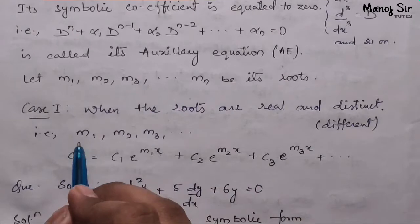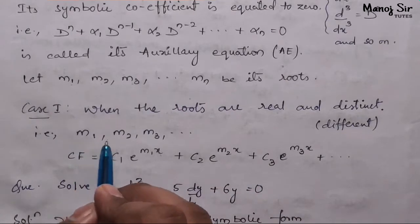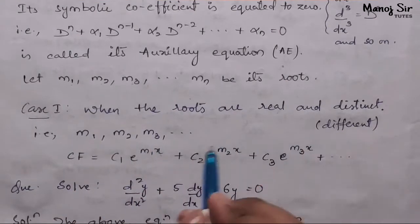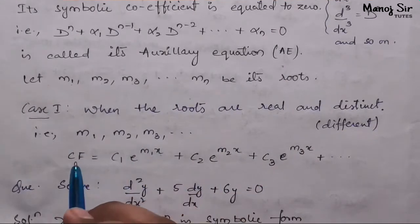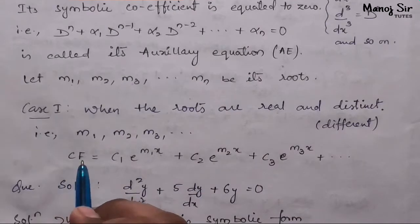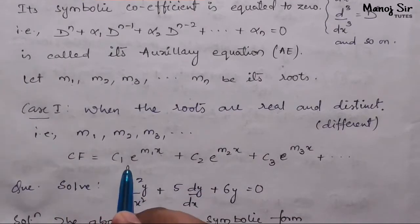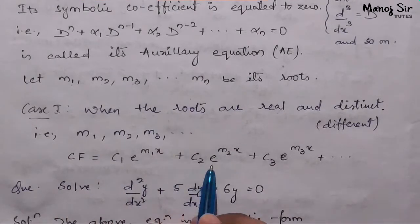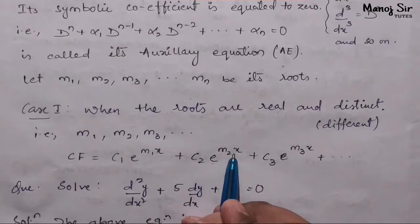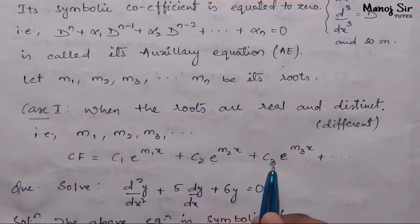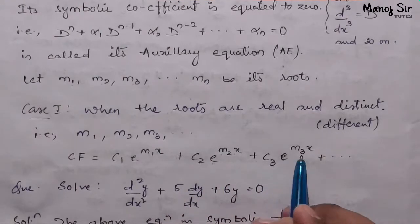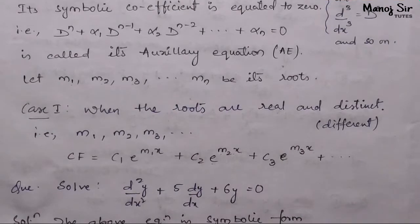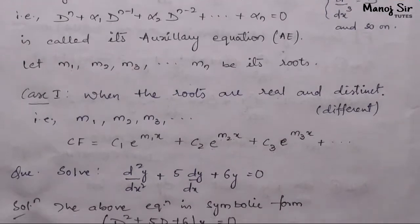Suppose the roots are m₁, m₂, m₃, and so on. If such is the case, then the complementary function CF equals c₁·e^(m₁x) plus c₂·e^(m₂x) plus c₃·e^(m₃x), and so on. Let us try to solve one problem with this — that will give a very good idea about case number one.